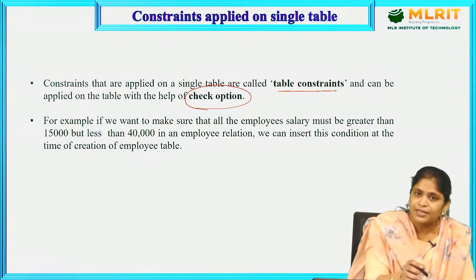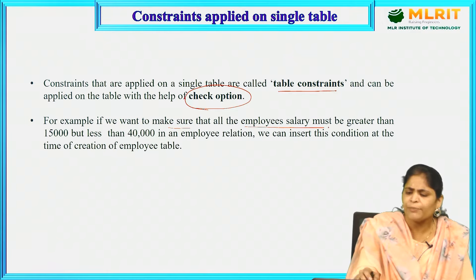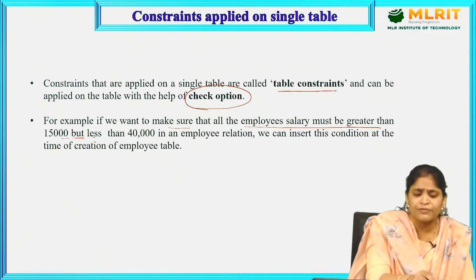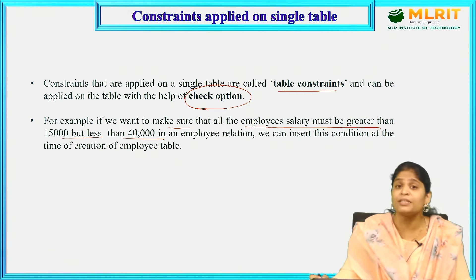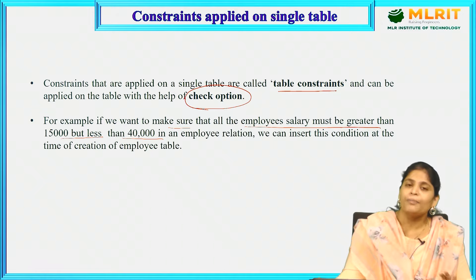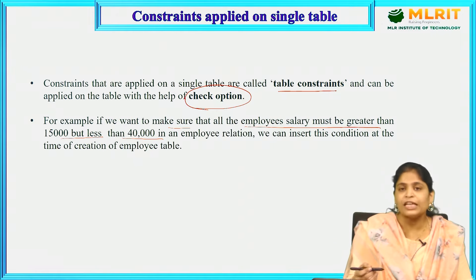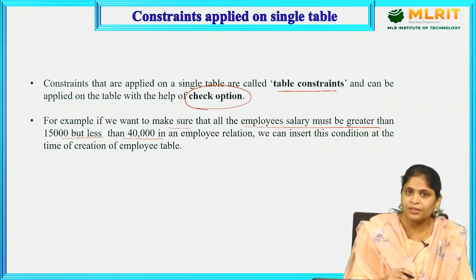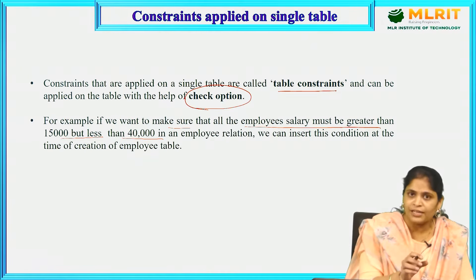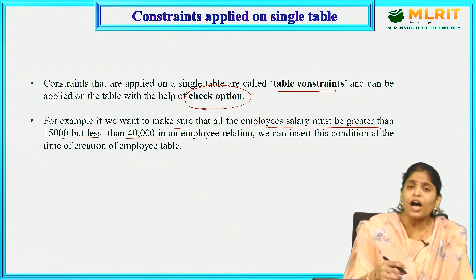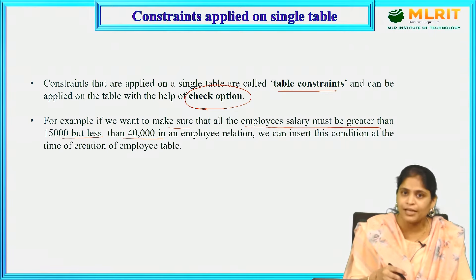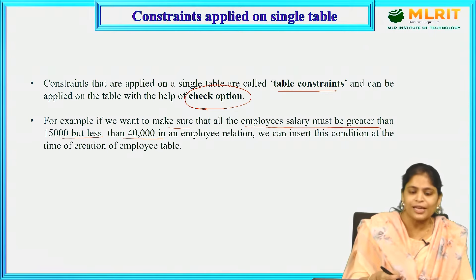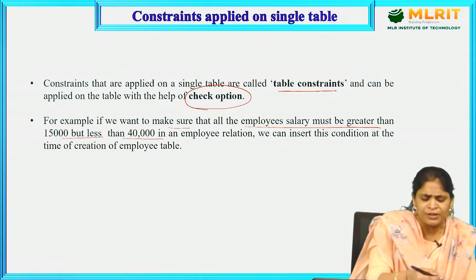For example, if we want to make sure that all employee salaries must be greater than 15,000 and less than 40,000 — that is, the salary must be in the range of 15,000 to 40,000 — we can maintain that constraint by creating the employee table itself, before any data is inserted.